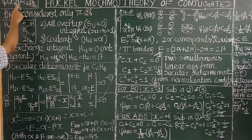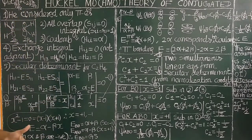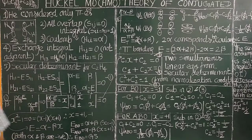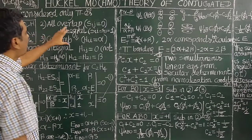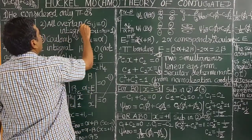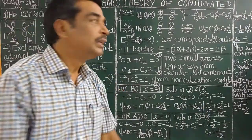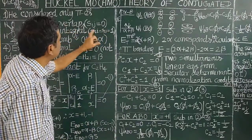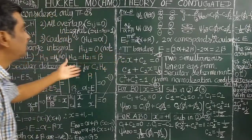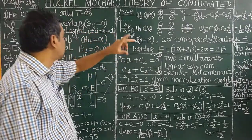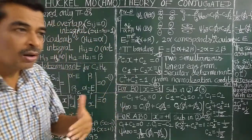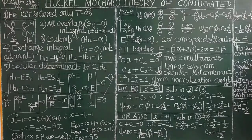The coefficients c1 and c2 are the coefficients of the atomic orbitals. All overlap integrals S_ij are assumed to be zero in Hückel's molecular orbital theory.